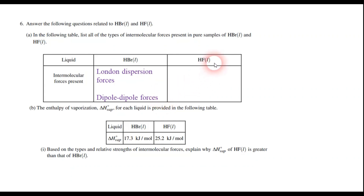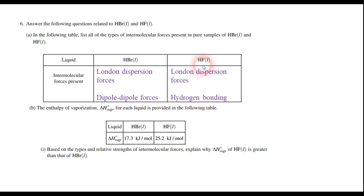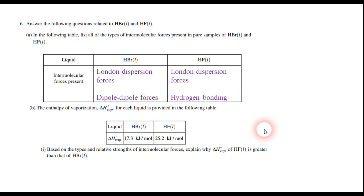HF is really very similar — it has London dispersion forces, because everything does, but it also has hydrogen bonding. The difference is that you have to have an H-F bond, an H-O bond, or an H-N bond to have hydrogen bonding, and HF has one of those. So hydrogen bonding and dispersion forces on the HF, and dipole-dipole plus dispersion for HBr. Give yourself a point for getting all that.